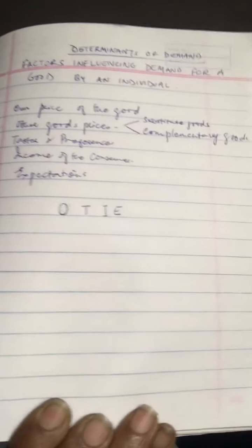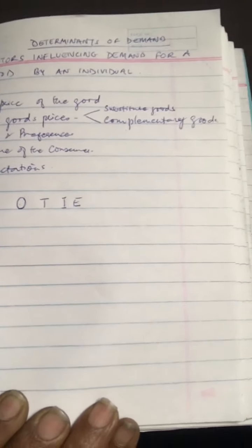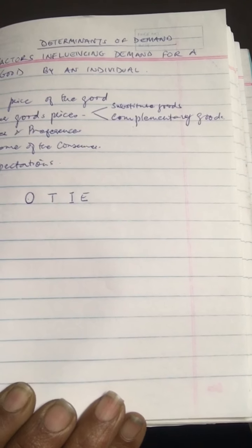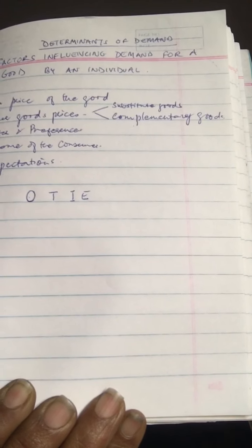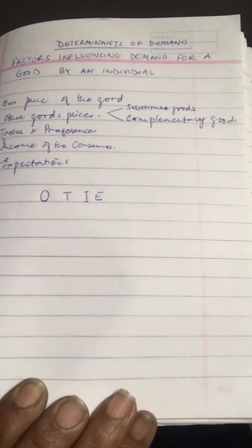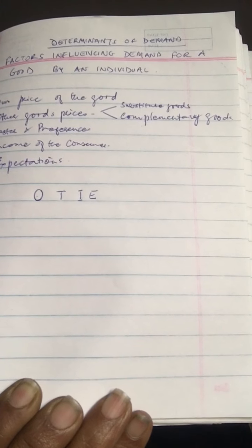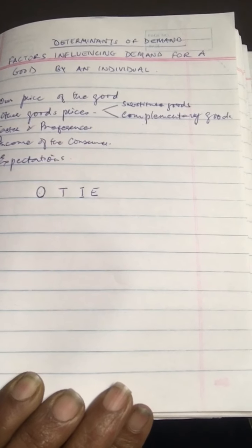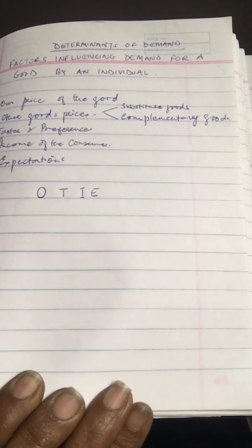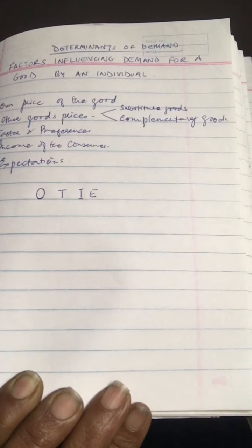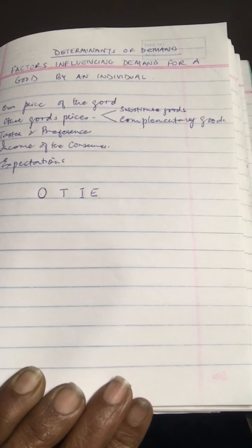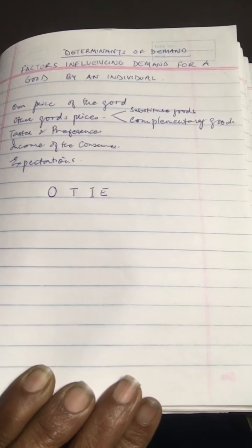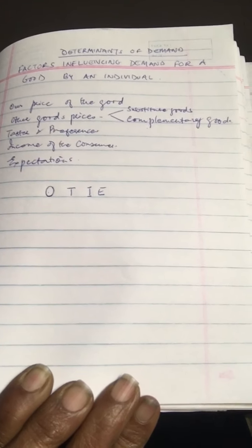Now let's take T — tastes and preferences of the consumer. This is a basic factor behind demand. Unless the consumer has a taste for a good, he is not likely to buy it, however cheap it is or however rich he is. When fashions change, demand for old-fashioned goods declines sharply while demand for latest fashion goods rises sharply. So with changes in tastes and preferences, demand also changes.